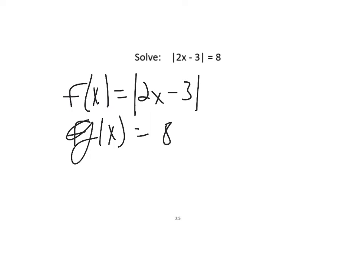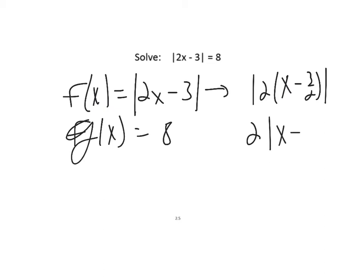What I can do is rewrite this thing. If I factor out a 2, I get 2 times |x minus 3/2|. Because the absolute value of a product equals the product of the absolute values, the absolute value of 2 is just 2, so I can bring that out. Now it looks like a transformed graph — shifted right 1.5 and stretched vertically by a factor of 2.